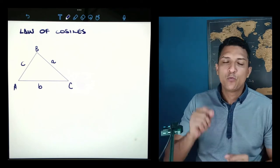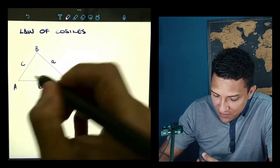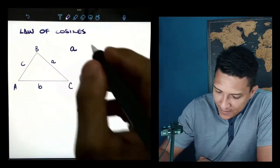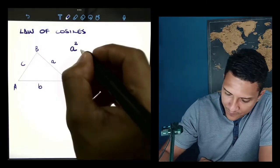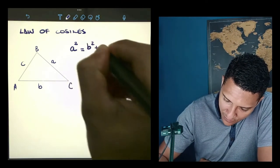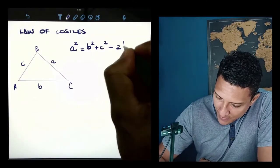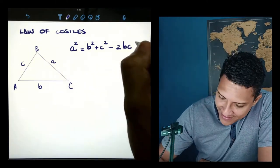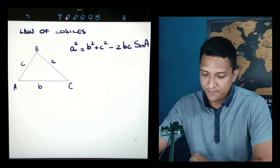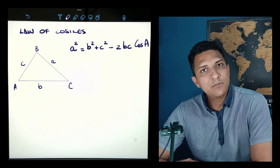We always start with the side of the angle that we are looking for. So if angle A is what I'm looking for, I'm going to start writing side A. Side A squared equals the other two sides squared: B squared plus C squared, minus two times B times C, cosine of the angle that I'm looking for. So side A squared equals B squared plus C squared minus 2BC cosine of A.